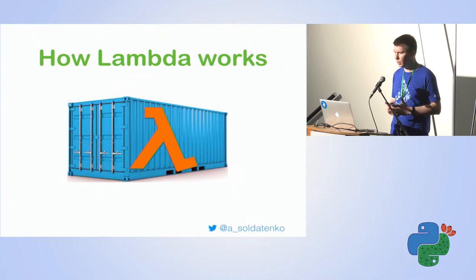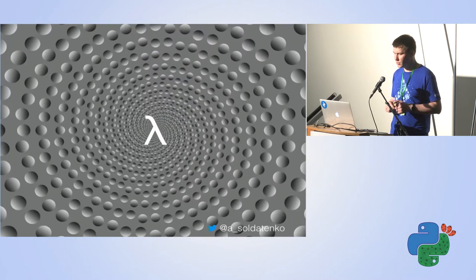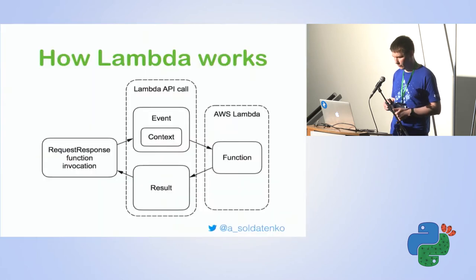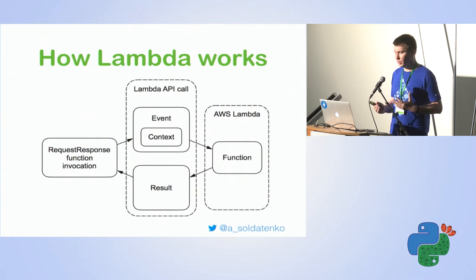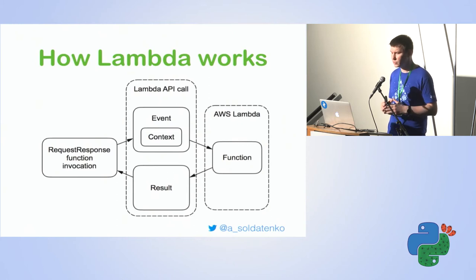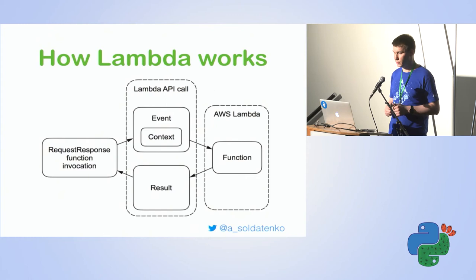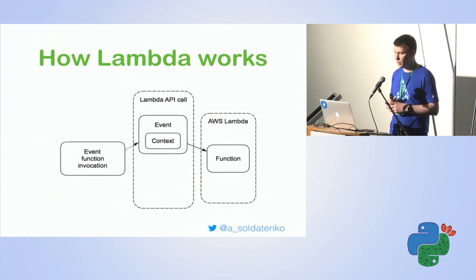Lambda is serverless, but how does it really work? It's a slightly different approach from your typical Python application. Using a diagram from a famous book about serverless: you can think about it like a request-response cycle — a request goes to a Lambda, you have an event, you have a context, the function executes and you see results. This is synchronous Lambda, also called request-response. Another approach is asynchronous: an event is triggered and Lambda executes your function.